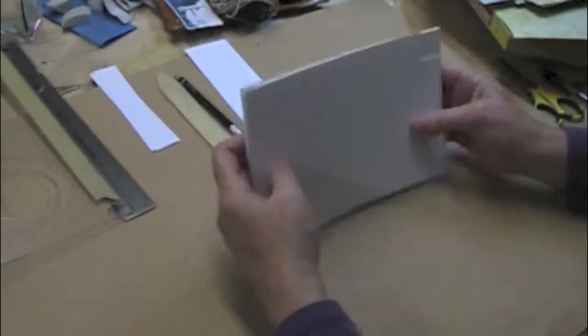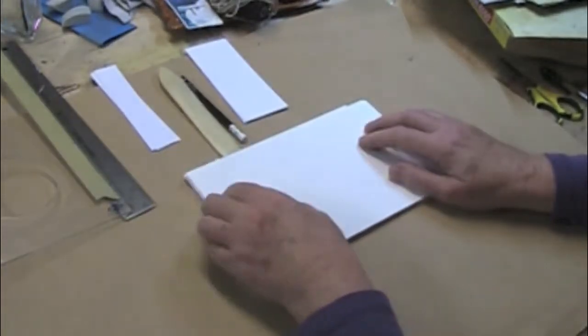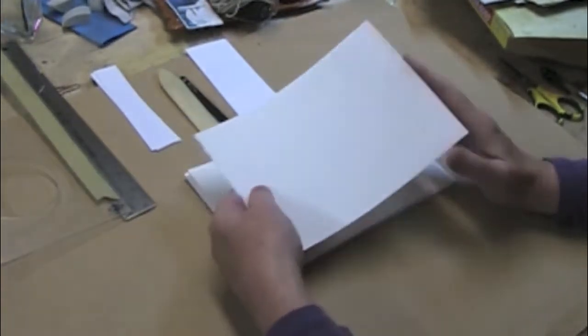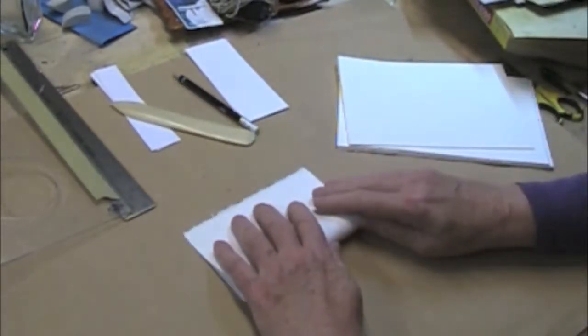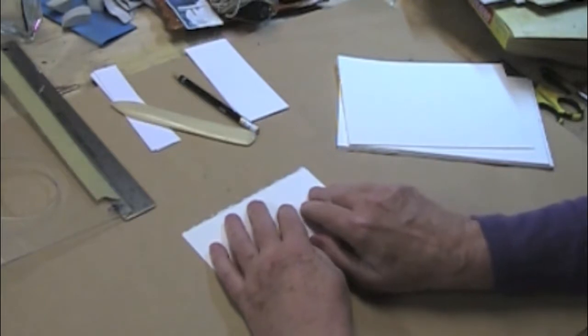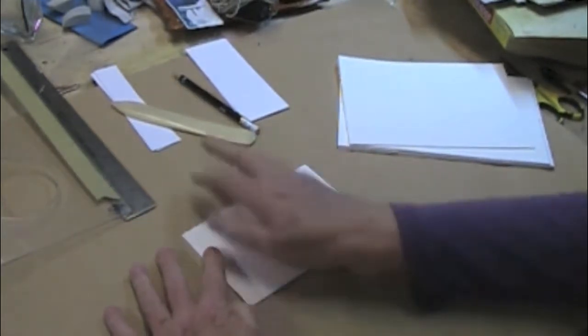Let's start with a little vocabulary. A folio is one piece of folded paper, so that would be a folio.